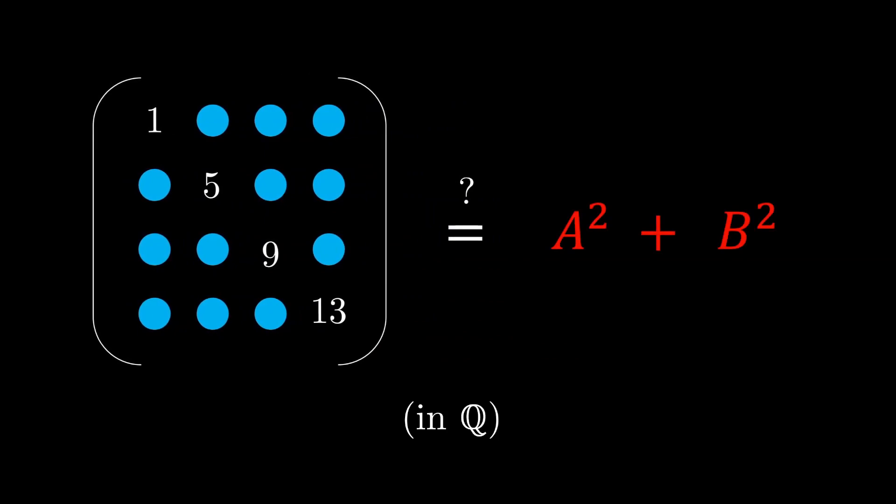Can you always write it in the form a² plus b², where a and b are also 4x4 matrices with entries in the rational numbers?